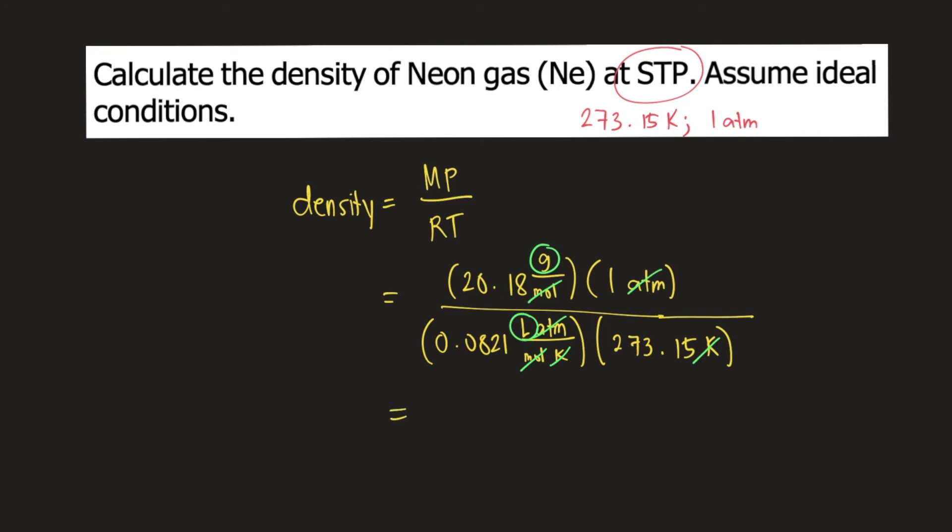So density is in grams per liter. And if you solve for the density of neon at STP, this is equal to 0.90 grams per liter. And this is the answer to the question.